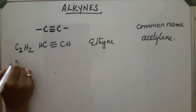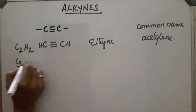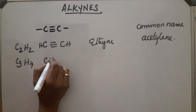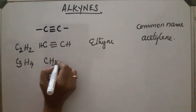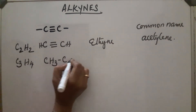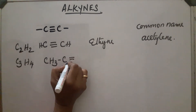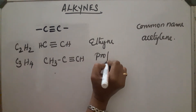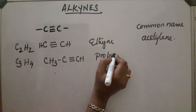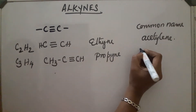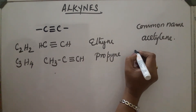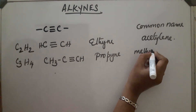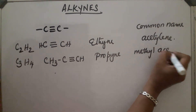The next compound is C₃H₄. Its structure is CH₃–C≡CH. This is called propyne, and its common name is methylacetylene.